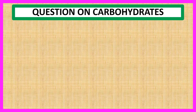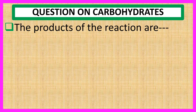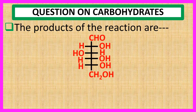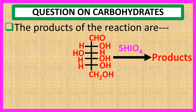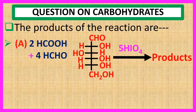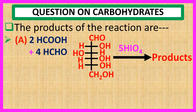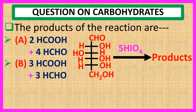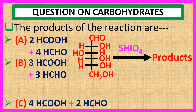Welcome everyone. Question on carbohydrates: the products of the reaction are when glucose reacts with 5 molecules of HIO4. The choices are: A — 2 molecules of formic acid plus 4 molecules of formaldehyde; B — 3 molecules of formic acid plus 3 molecules of formaldehyde.